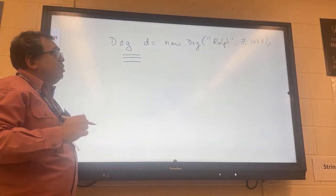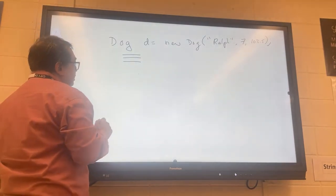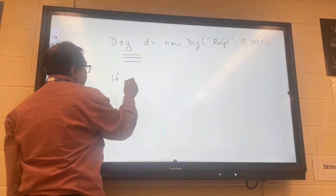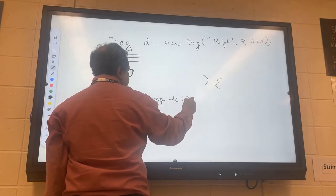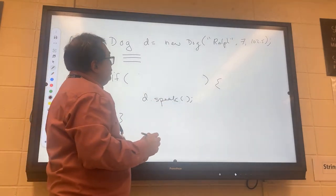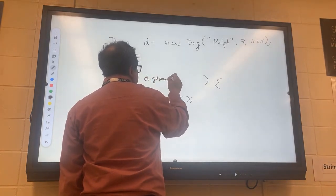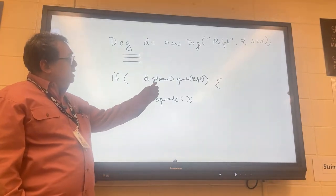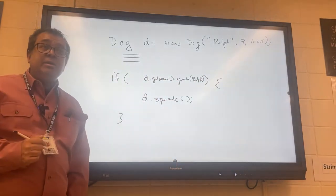Let's say I want the dog to speak, but only if the dog's name is Ralph. So I'm going to say if, there's some stuff in here, and then in here I'll say D dot speak. Now I want to know what should I put in here. Your first thought might be you could say D dot get name, and then I go dot equals. So if the D dot get name equals Ralph, I'm asking the dog its name and then checking to see if it's Ralph, and only if it's Ralph is this dog gonna speak.